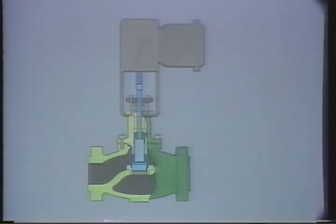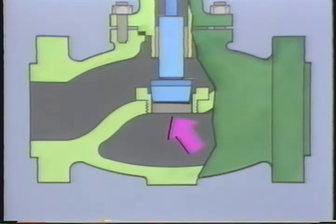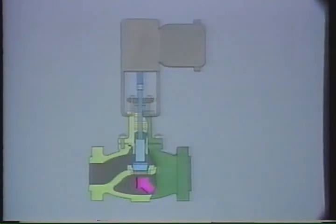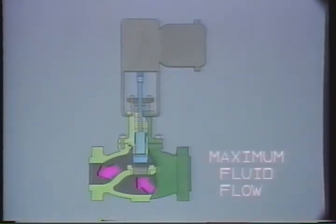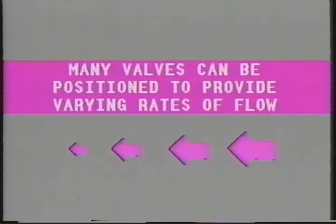When the plug and seat meet, the valve is closed. In this valve, when it is in the closed position, no usable flow passes through the device. When the plug is as far away from the seat as it can go, the valve is at the fully opened position. In the fully opened position, the maximum amount of processed fluid flows through. Many valves can be positioned at several points in between closed and fully open to provide varying rates of flow through the valve.